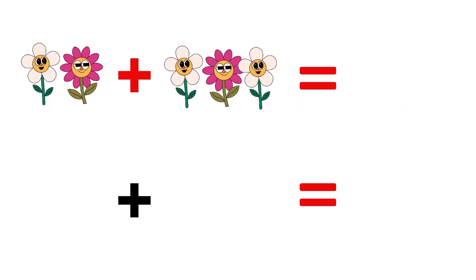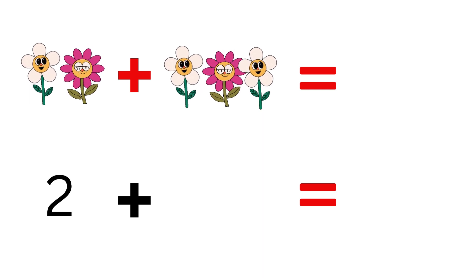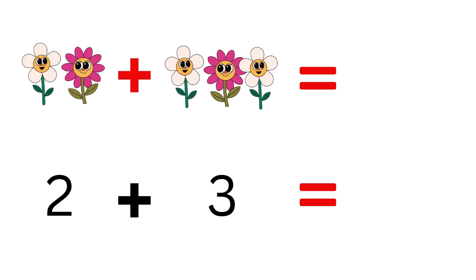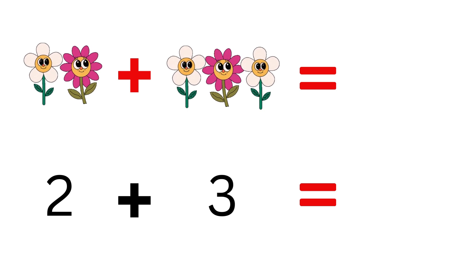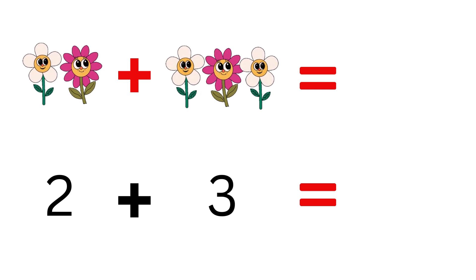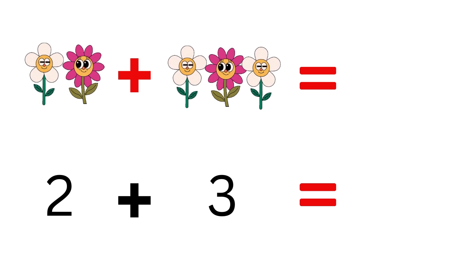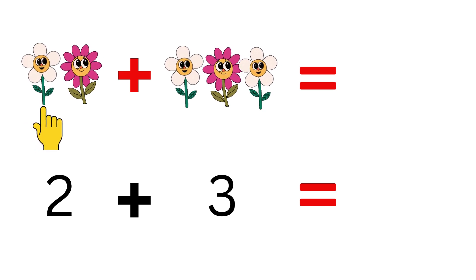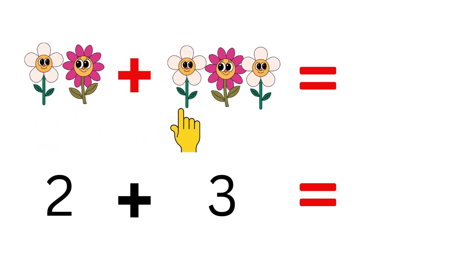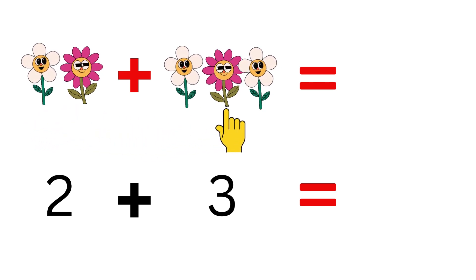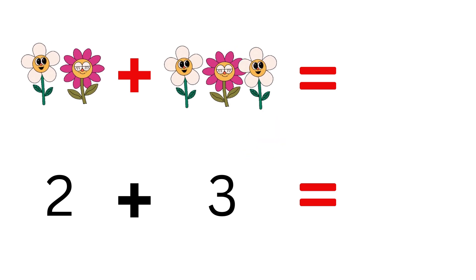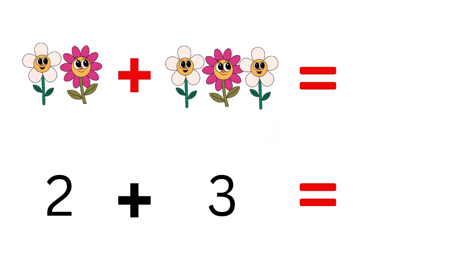Next, two flowers plus three flowers is equal to how many flowers? Let's count: one, two, three, four, five. In total, five flowers.